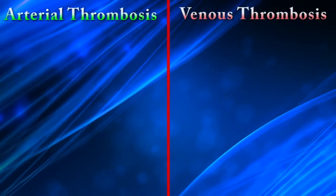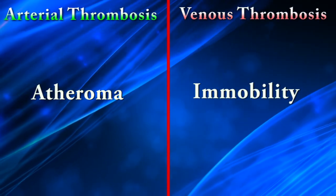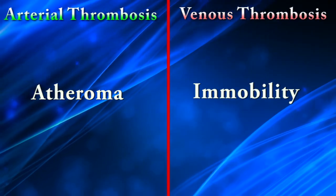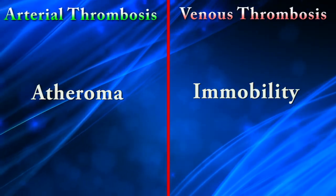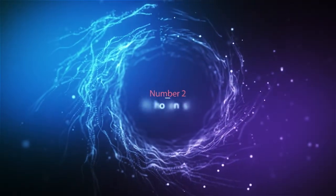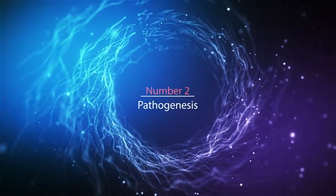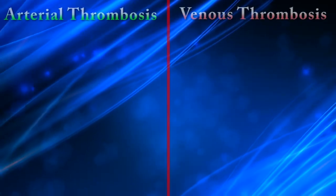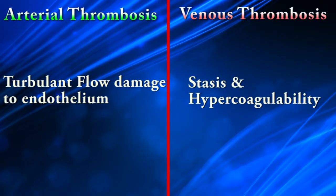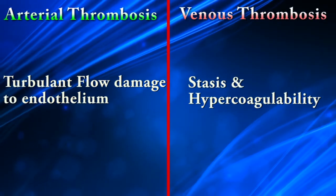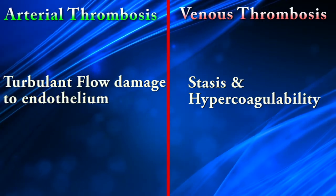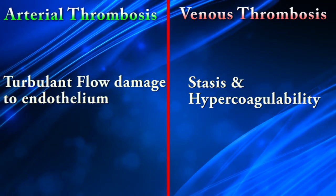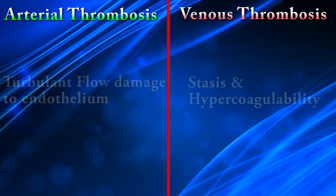Atheroma is a risk factor for arterial thrombosis, but venous thrombosis occurs because of immobility. In arterial thrombosis, turbulent flow causes damage to the endothelium, but venous thrombosis appears because of stasis and hypercoagulability.